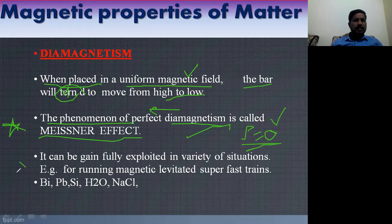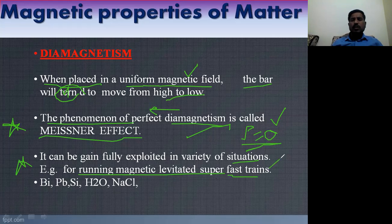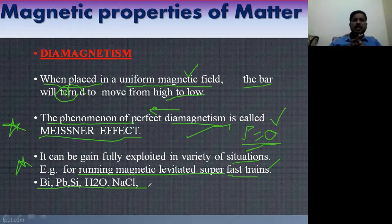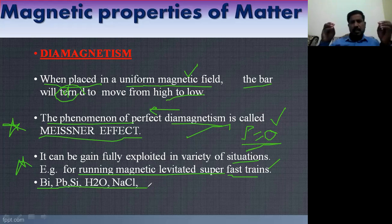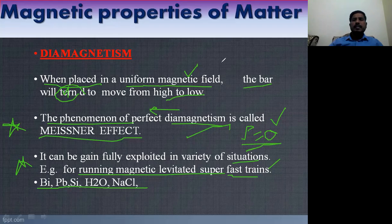Diamagnetic materials can be used to make superconductors. Superconductors are materials in which resistivity is zero and resistance is zero — they are highly conductive. This can be gainfully exploited in a variety of situations, for example for running magnetic levitation superfast trains, as used in Japan and China going up to thousands of kilometers per hour. Examples of diamagnetic materials: bismuth, lead, silicon, H₂O.